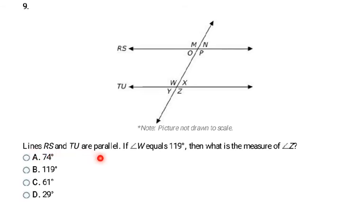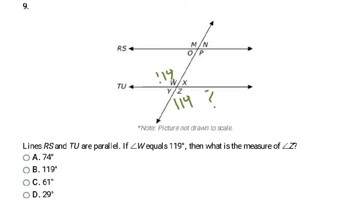Lines RS and TU are parallel. If angle W equals 119 degrees, what is the measure of angle Z? Copy the picture and write 119 degrees by W. Angles W and Z are vertical angles, so they are congruent. If W is 119 degrees, then Z is 119 degrees. My answer is B.